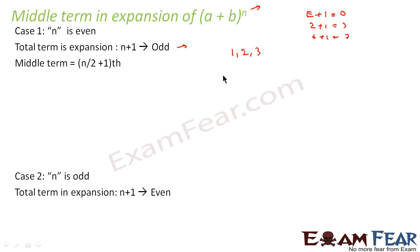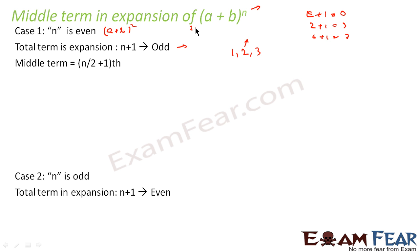Suppose we have (a + b) to the power 2. That gives 3 terms. The middle term is the 2nd term, which is nothing but n/2 + 1 = 2/2 + 1 = 2. So the second term is the middle term.